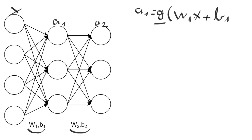and a2 equals to g. Here I use the same notation but the activation function g can be different. So g of w2 a1 plus b2.